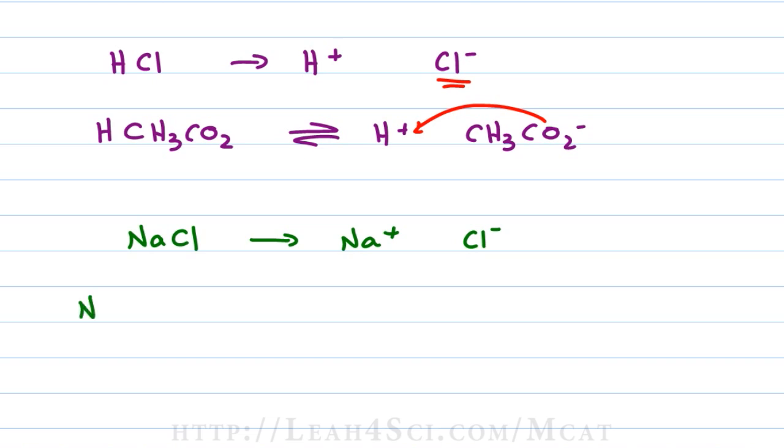But if I take the conjugate of a weak acid like acetate and dissolve that as a salt, for example, sodium acetate, this dissolves to give me Na+ and acetate, CH3CO2-.